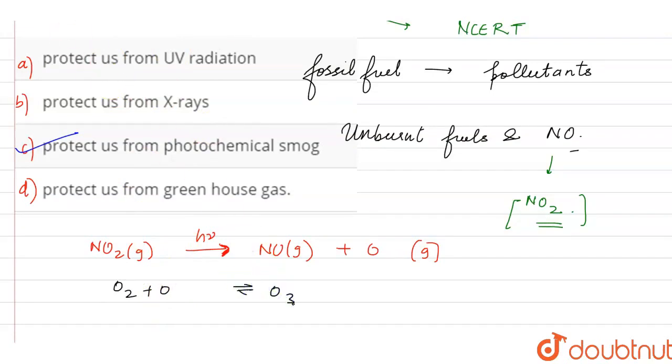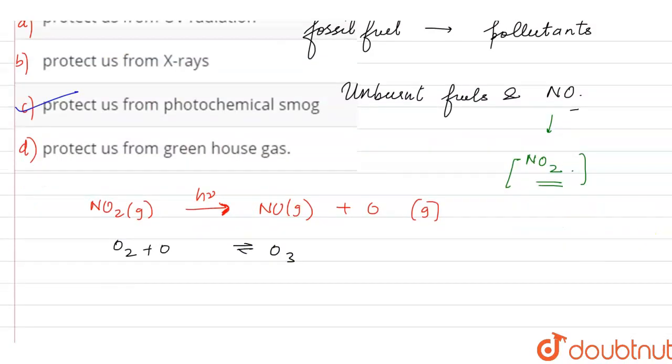So this ozone is formed in this above reaction. This will rapidly react with nitric oxide. So it will regenerate. So it will react with nitric oxide. So it will regenerate NO2. So NO2 is our gas at sufficiently high level.